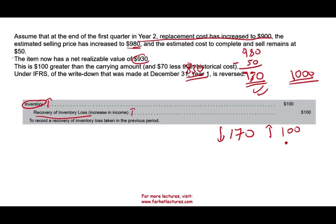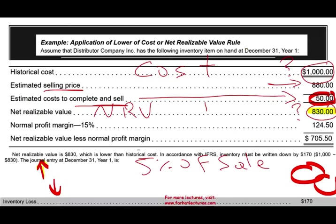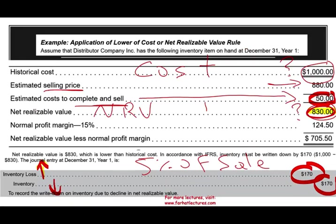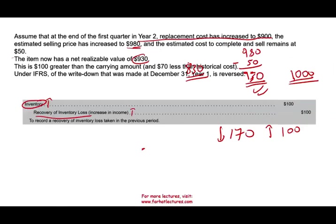Under US GAAP you cannot do this. Under US GAAP, once inventory is written down to $830, that $830 becomes your new historical cost. Once it's written down, you cannot write it up. If your inventory is really worth more, you'll recognize that profit when you actually sell it. This remains a key difference between US GAAP and IFRS — under GAAP, once LCM is applied it becomes your new cost, while under IFRS you can recover previously written-down inventory costs.